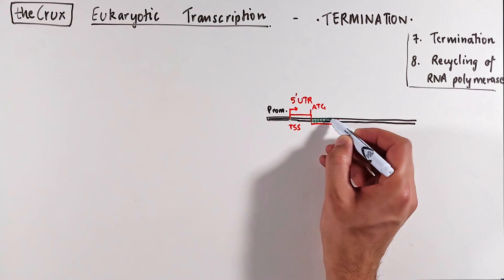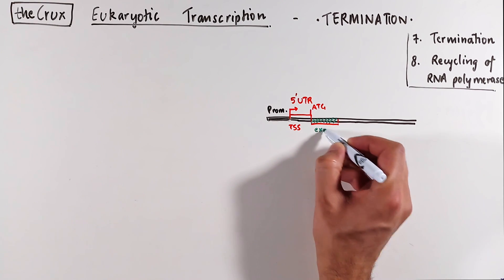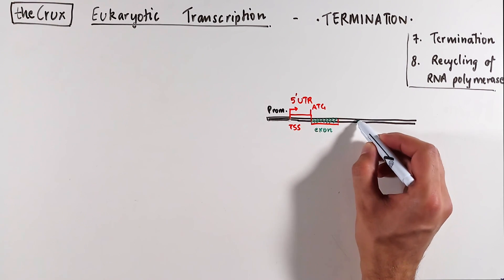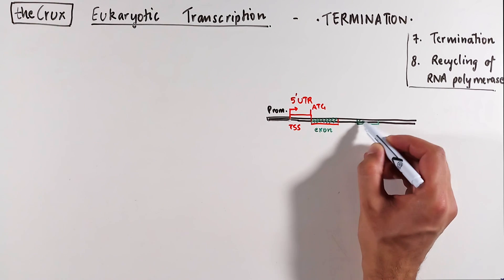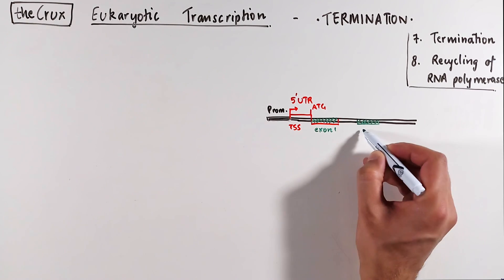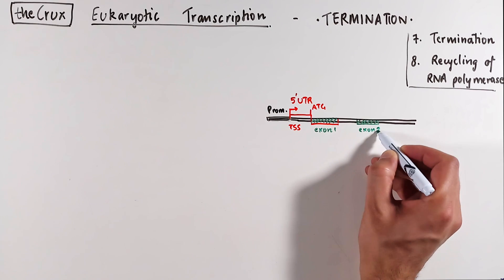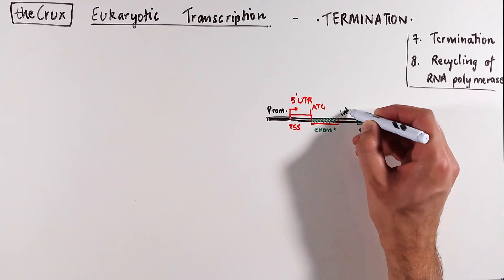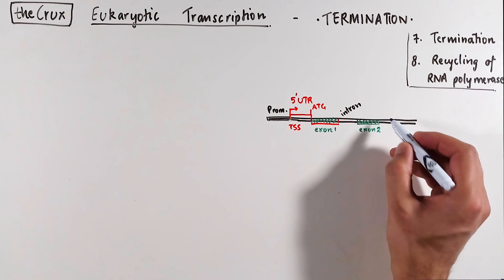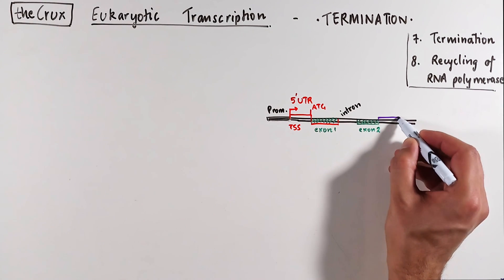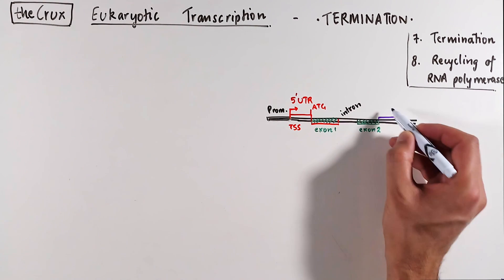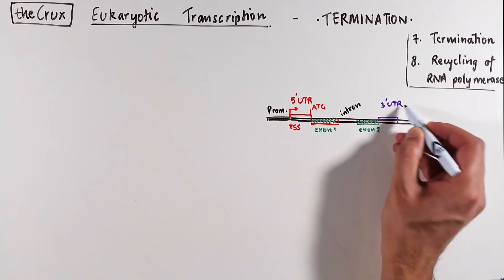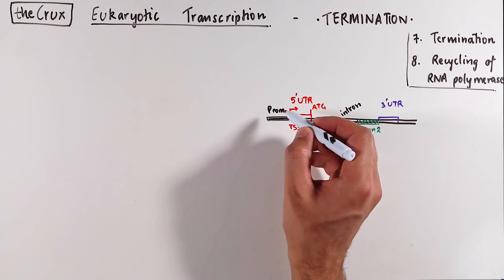At the end of the 5' UTR, you can find the start of the coding region, which marks the start of the first exon. In the mammalian genome, a gene can have multiple exons that are spread out. In between these exons you may find non-coding regions, known as introns. At the end of the coding region of the final exon, you have the 3' untranslated region.